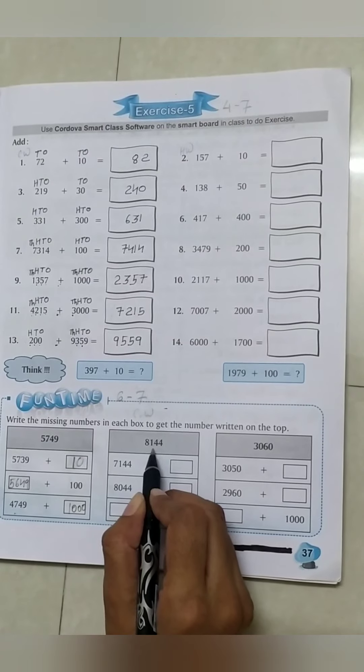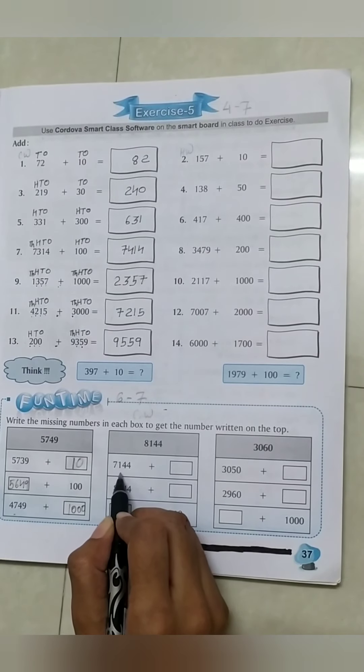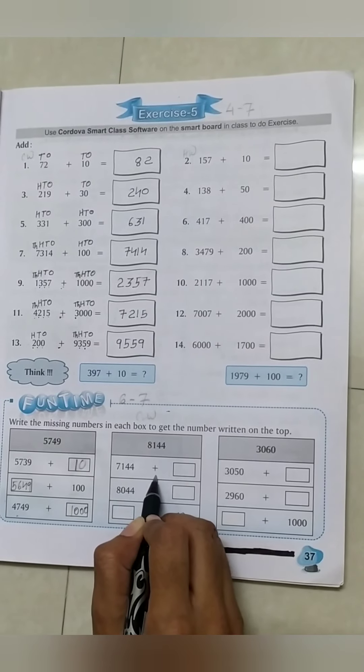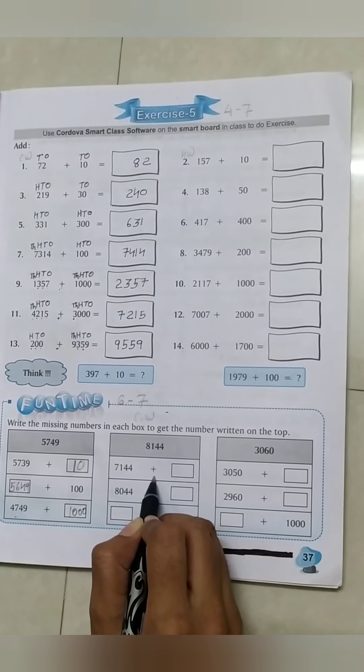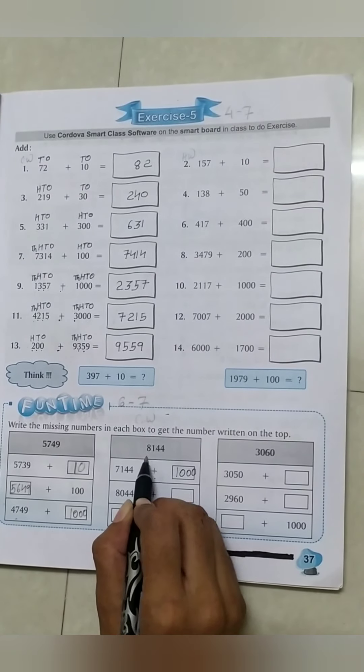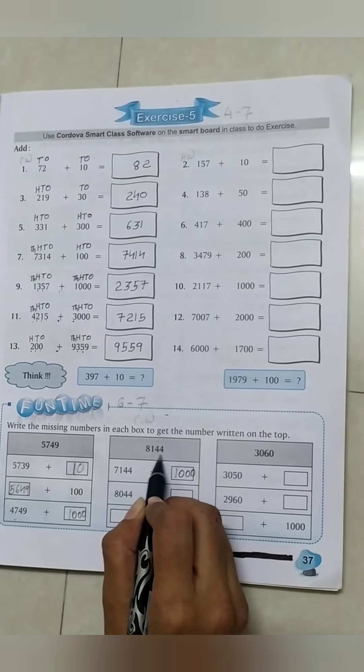Question No. 2: 8144. First blank, 7144 plus how many numbers do we add? We add 1000 to get the answer 8144.